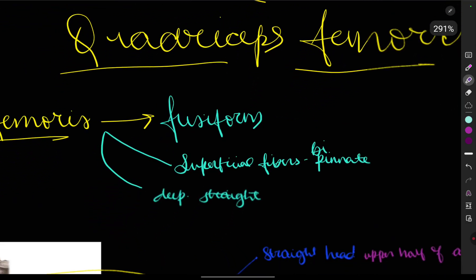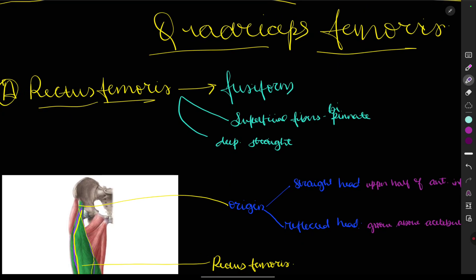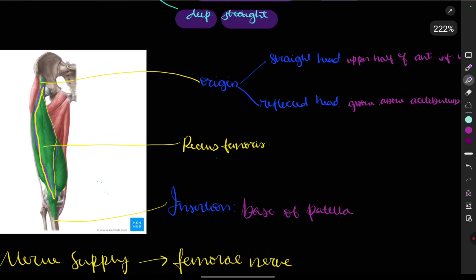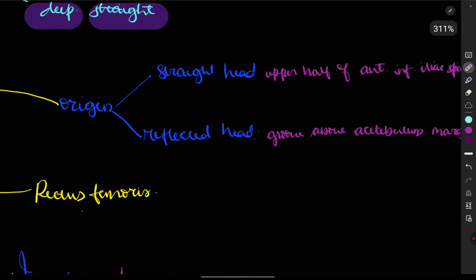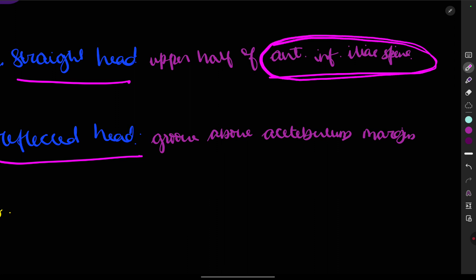Now we move to the quadriceps femoris muscle, starting with the rectus femoris. It is a fusiform muscle with superficial bipinnate fibers and straight deep fibers. Its origin has two heads: the straight head arises from the upper half of the anterior inferior iliac spine — note that sartorius arose from the anterior superior iliac spine, while rectus femoris arises from the anterior inferior iliac spine. The straight head: S for straight, S for spine.